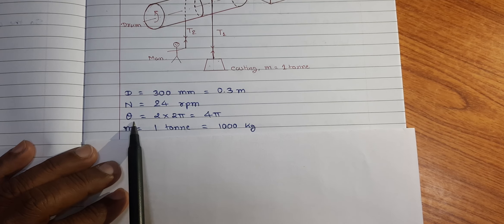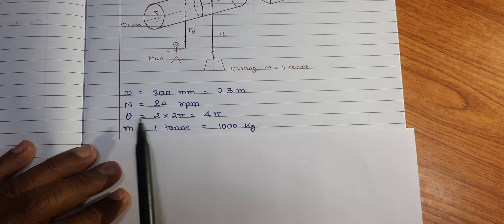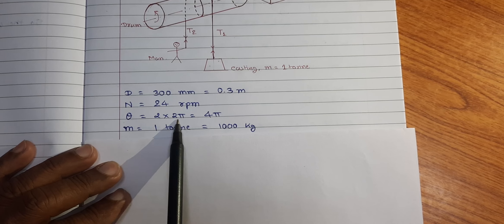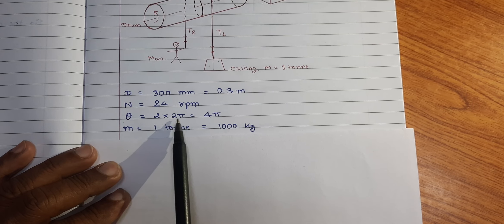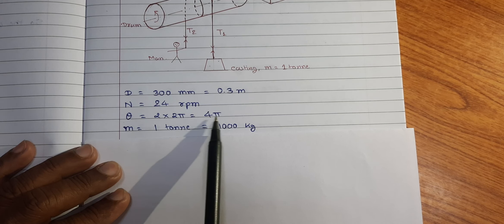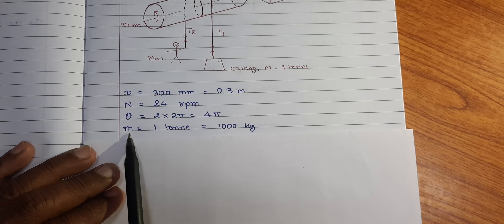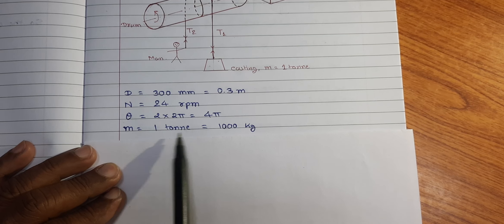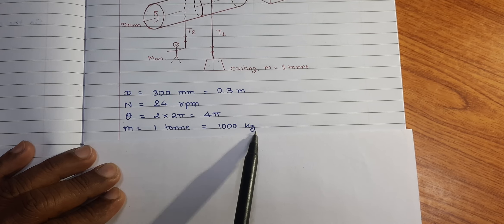The angle of lap as we discussed is theta is equal to 2 into 2 pi, equal to 4 pi. Mass of the casting is 1 ton that is equal to 1000 kg.